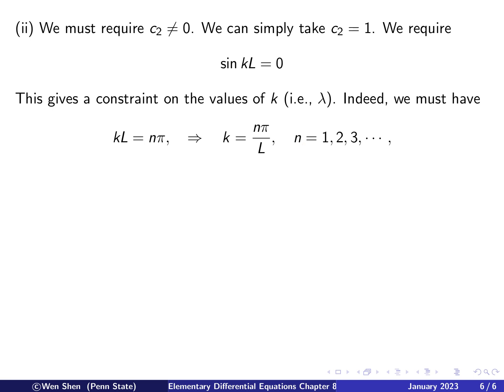And this holds for n = 1, 2, 3, 4, and so on. So we see that for the case where lambda is positive, we actually have found infinitely many, we call a family of eigenvalues and eigenfunctions.